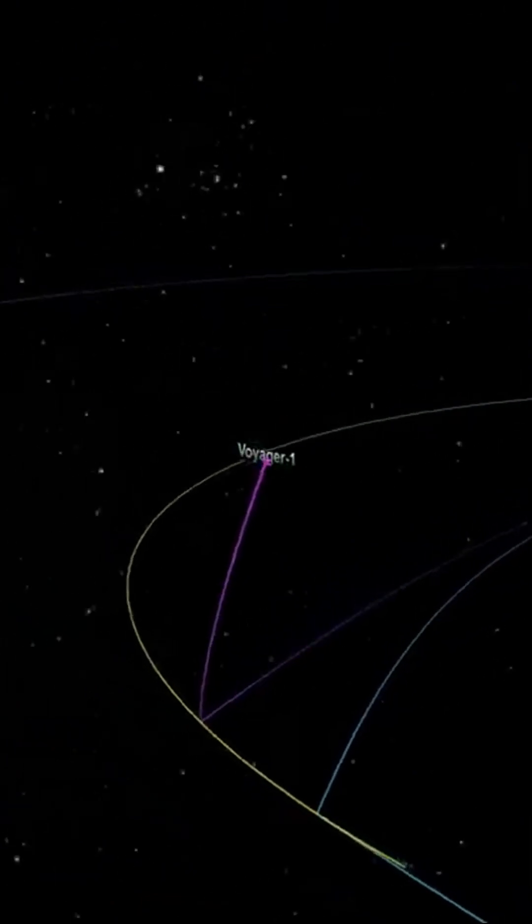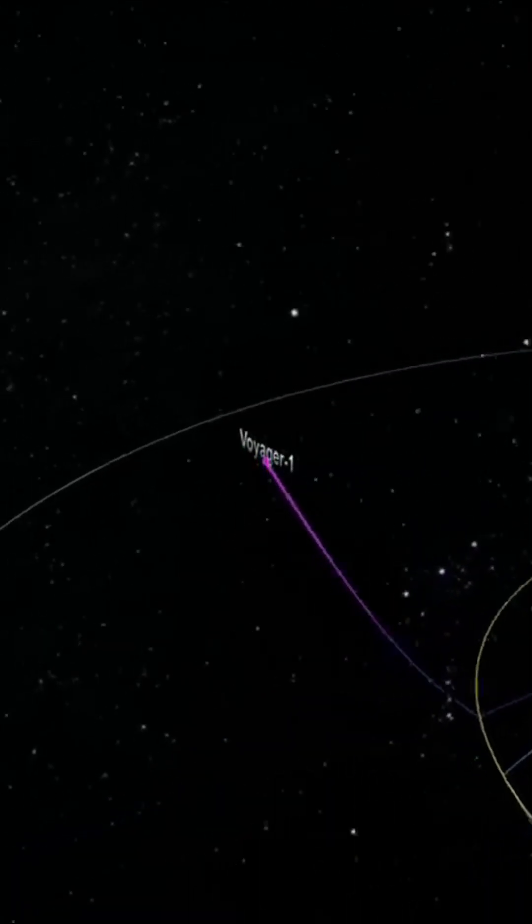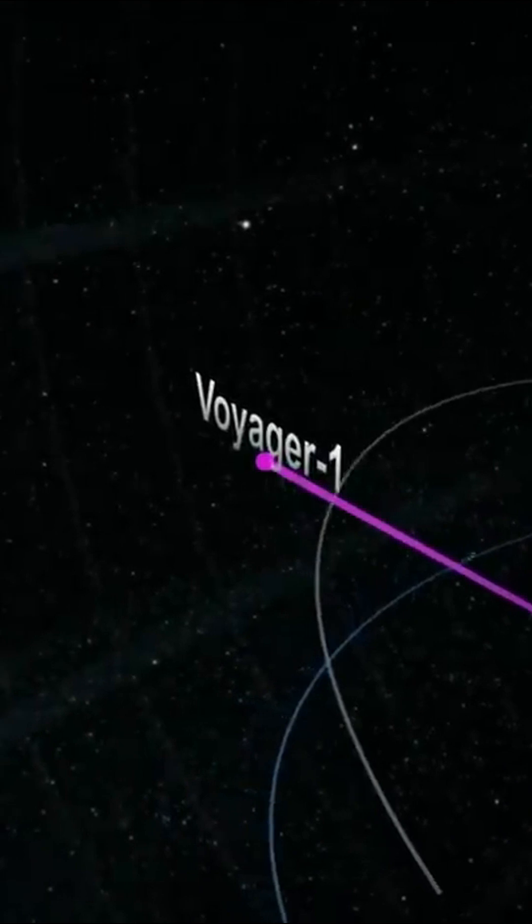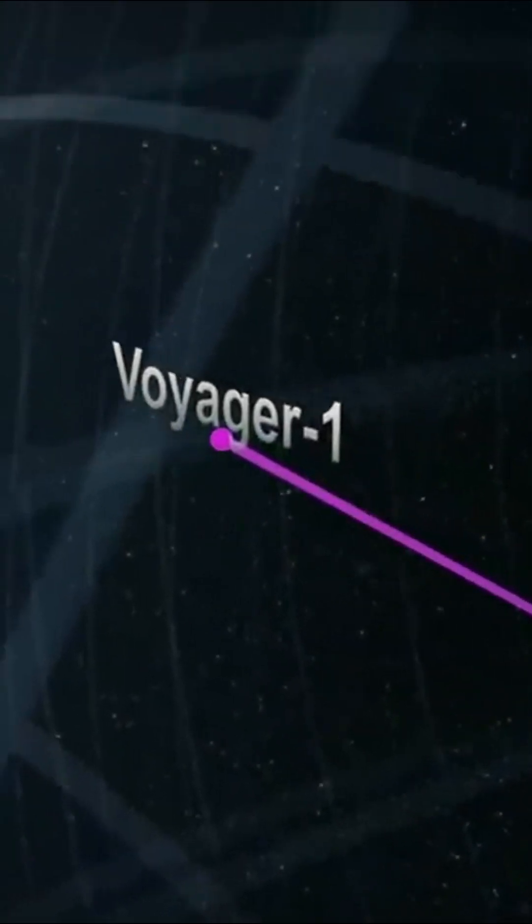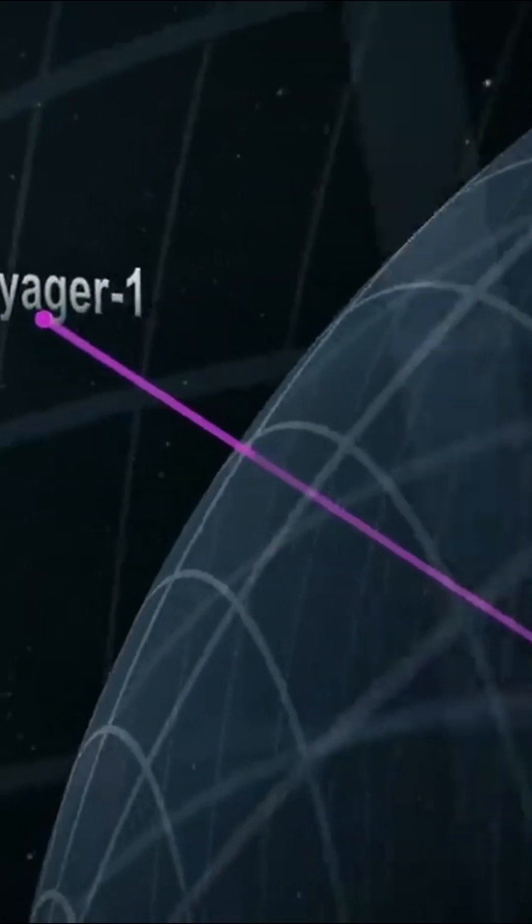However, this is not the case. NASA's Voyager 1 spacecraft, launched in 1977, took over 30 years to reach the edge of the heliosphere, despite reaching speeds of 61,500 kilometers per hour, or 38,000 miles per hour.